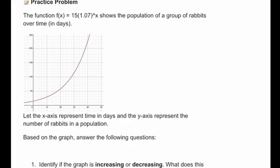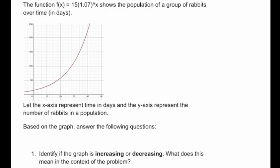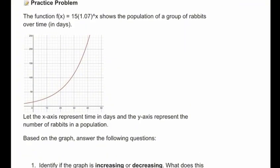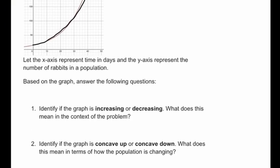Time for the practice problem. So the function f(x) equals 15 times 1.07 to the x shows the population of a group of rabbits over time. The x-axis represents time in days, and the y-axis represents the number of rabbits. So we need to answer the questions. Identify if the graph is increasing or decreasing, and what does it mean in context. So let's trace the graph. So that's obviously going up, so it's an increasing function.